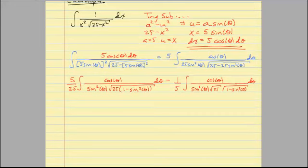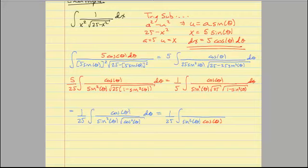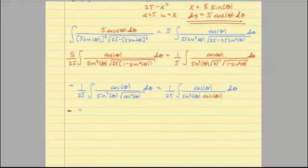Let's keep rewriting. The square root of 25 is 5, so I pull that out, giving me 1 over 25 out front with sine squared in the denominator. Underneath the radical I have 1 minus sine squared, which from the Pythagorean identities equals cosine squared. I still have cosine theta d theta in my numerator. So I have 1 over 25 times the integral, with sine squared theta in the denominator. The square root of cosine squared is just cosine of theta, and then we see that things will cancel.